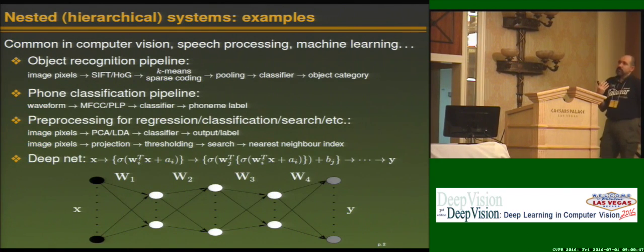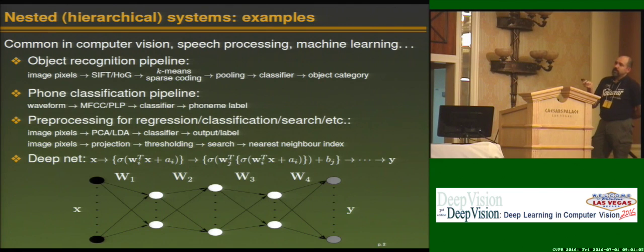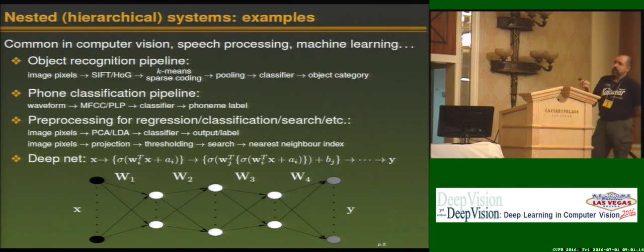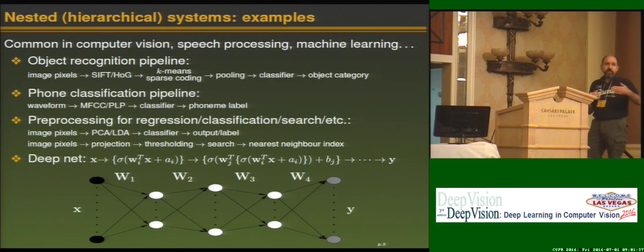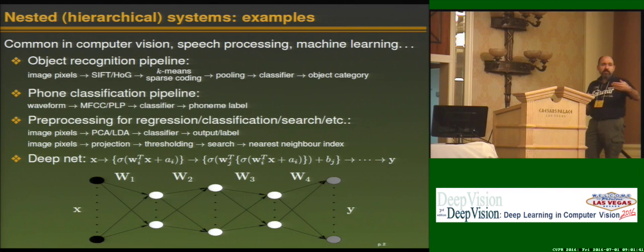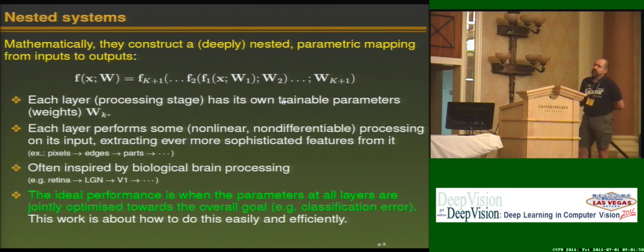I'm going to be using mostly the term 'nested' for what everybody here calls 'deep.' Nested is the mathematical form of a function of a function, and so on. Neural networks are an example of that. There are lots of systems of this type in computer vision, speech processing, and machine learning — such as object recognition pipelines. In machine learning, you also have things that are not recognized as deep, such as piping an image into PCA and then into a classifier. All these systems share mathematically that they are nested functions: a sequence of parametric functions.